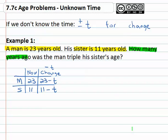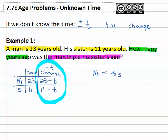But what happened at this unknown place and time? Well, what happened was the man was triple his sister's age. The man equals triple, three times his sister. So now if we look at the change column we can substitute to get an equation we can solve for the time.